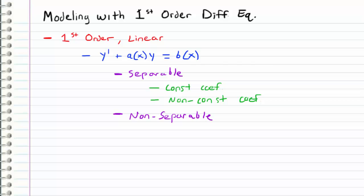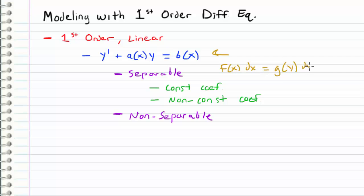First, let's go over a quick recap of what we've learned so far. We've been dealing with first order linear differential equations of the form y prime plus a(x)y equals b(x). We've talked about two different cases — one was the separable differential equation, which means we could separate the variables into a function of x times dx set equal to a function of y times dy, and then integrate both sides directly to solve.